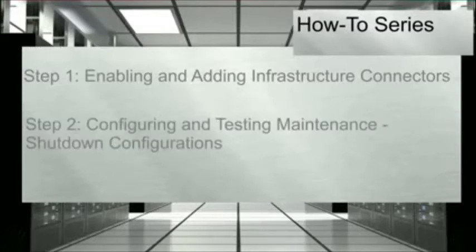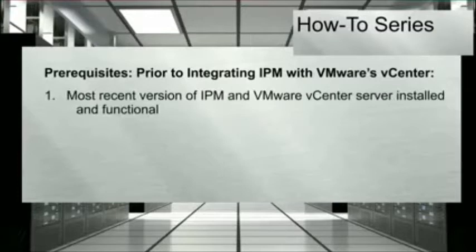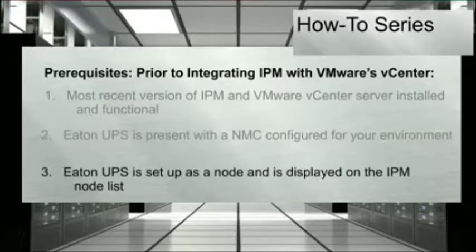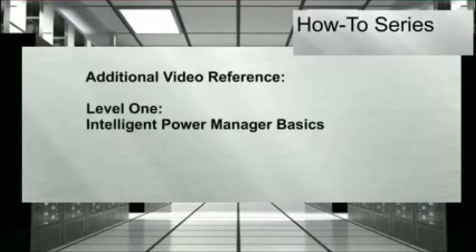Before we begin, ensure that you have the following prerequisites complete: the most recent versions of IPM and VMware vCenter server installed and functional, an Eaton UPS present with a network interface card configured for your environment, and the Eaton UPS set up as a node and displayed on the IPM node list. If you have any questions concerning IPM setup or installation, refer to the video entitled Intelligent Power Manager Basics.